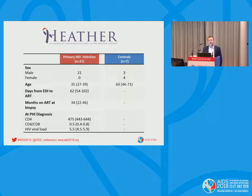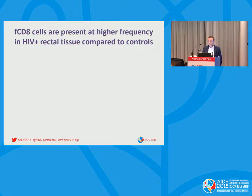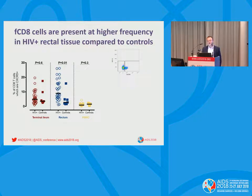The median time on antiretroviral therapy at gut biopsy in the primary infection cohort was 34 months. Follicular CD8 cells were defined as CXCR5-positive. A representative flow plot from rectal tissue illustrates the follicular and non-follicular CD8 populations. We first compared the frequency of CXCR5-positive follicular CD8s between HIV-positive individuals and controls in the terminal ileum, rectum, and PBMCs. We found significantly higher follicular CD8s in rectal tissue of HIV-infected individuals compared to controls, with no significant difference at other sites.